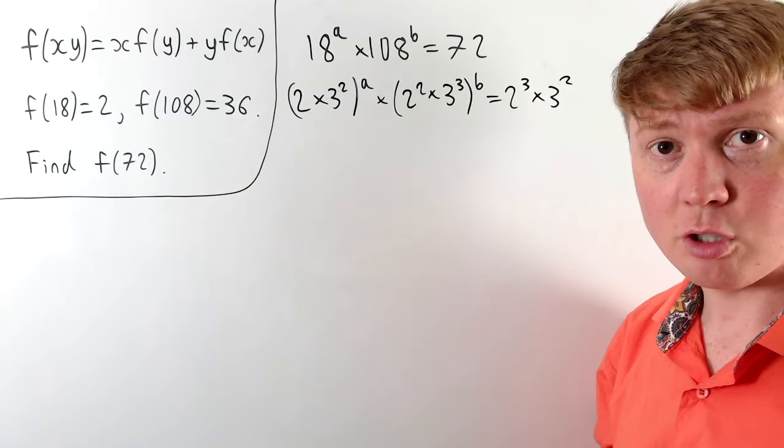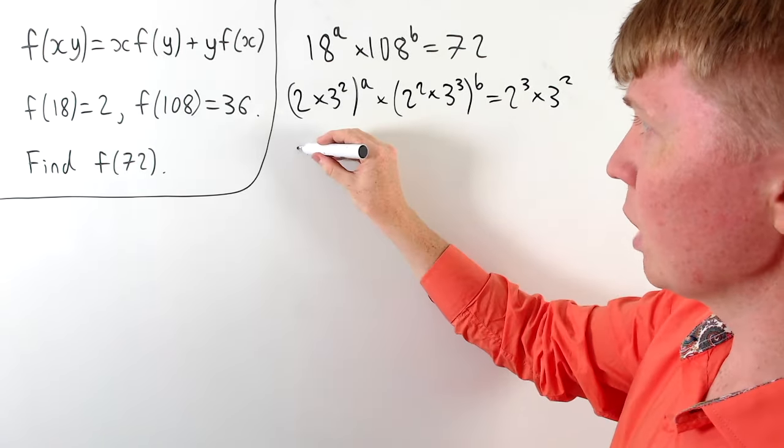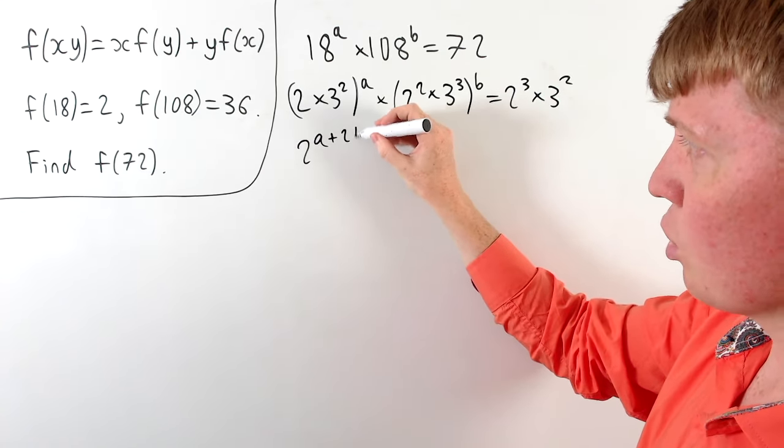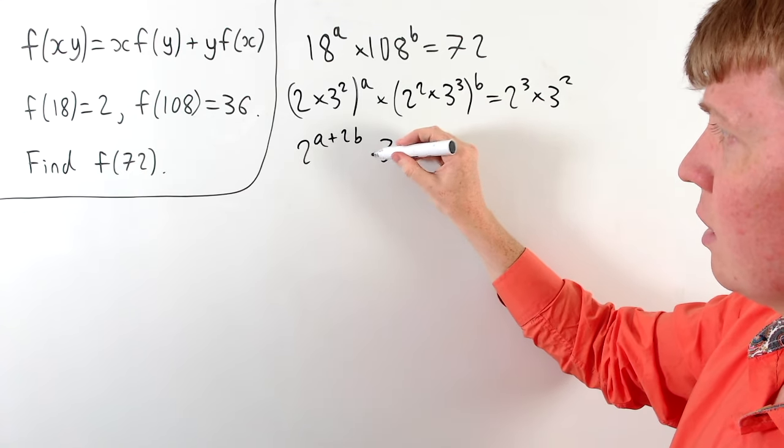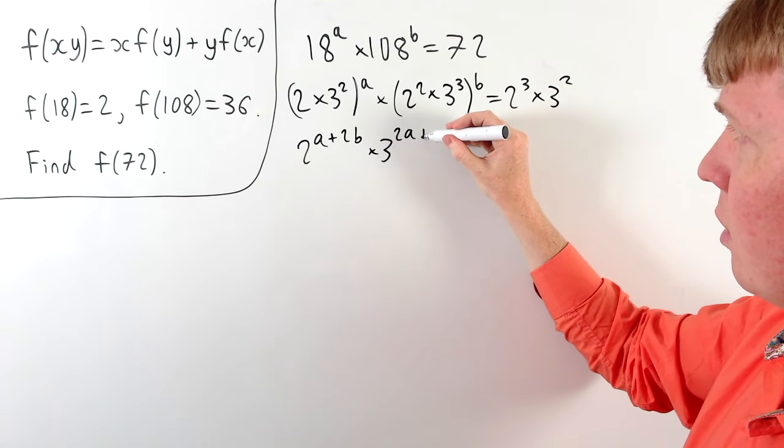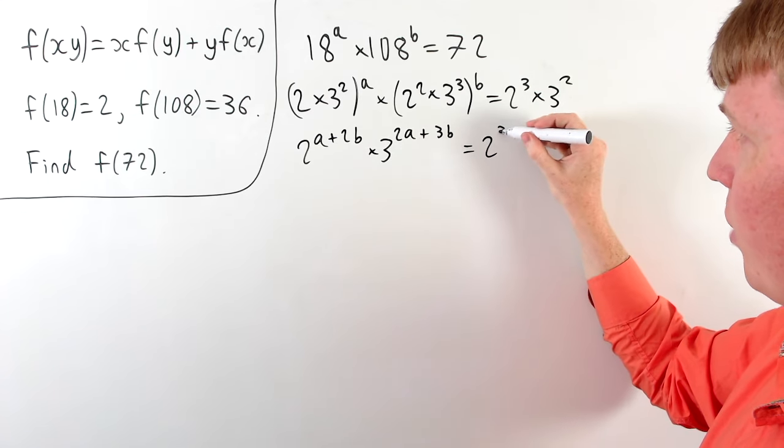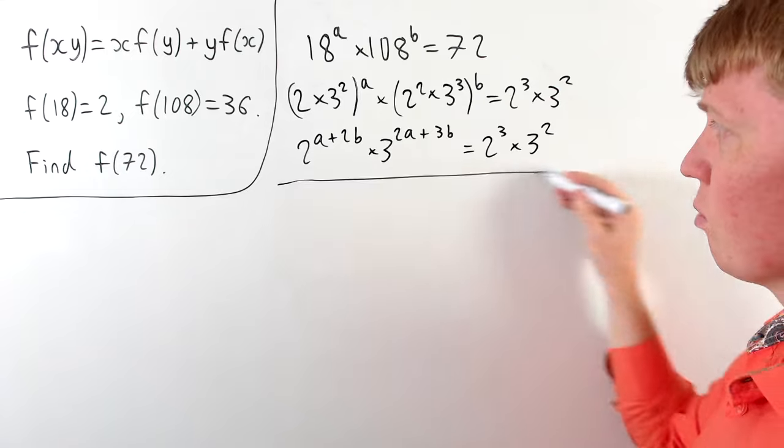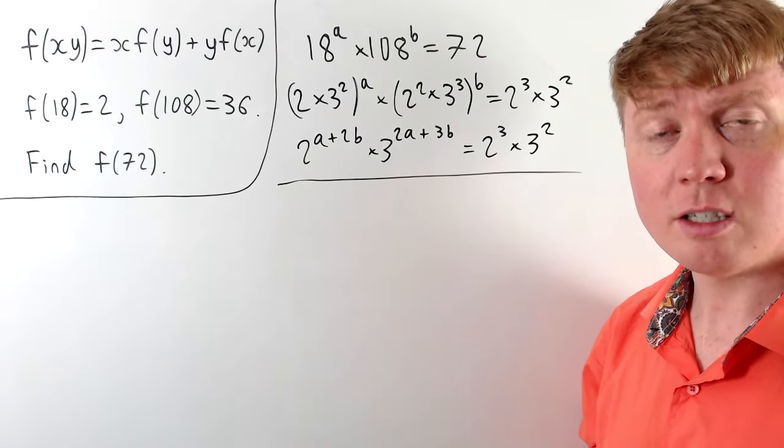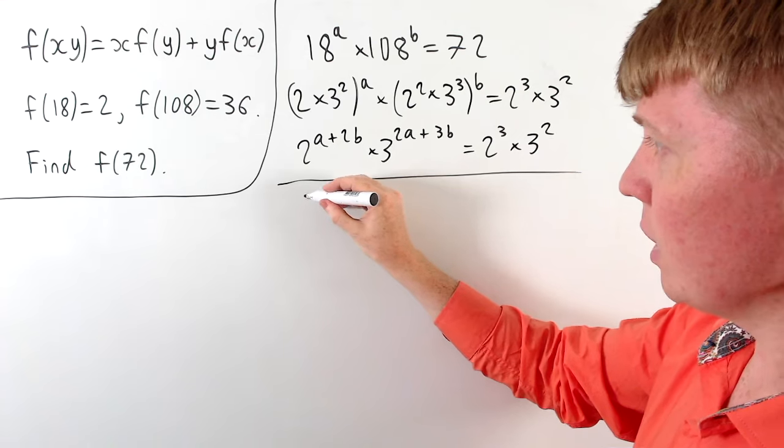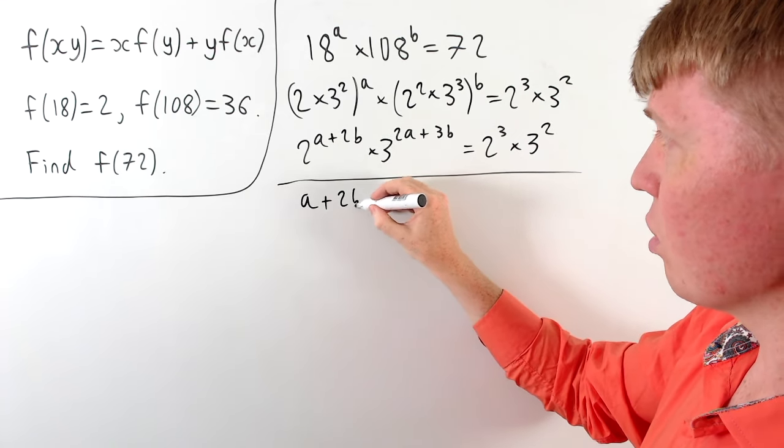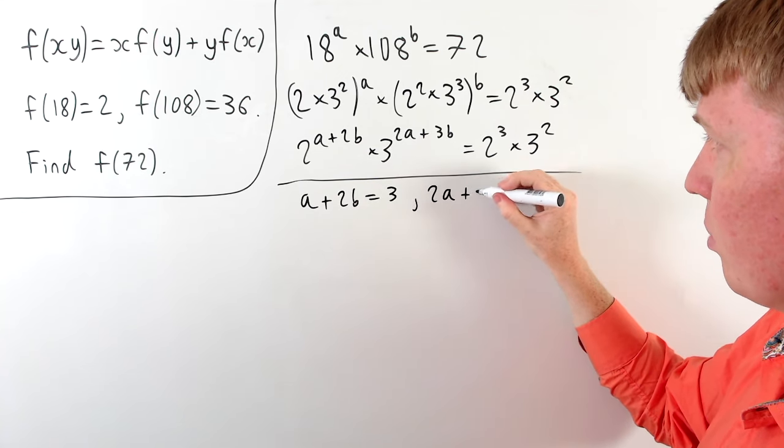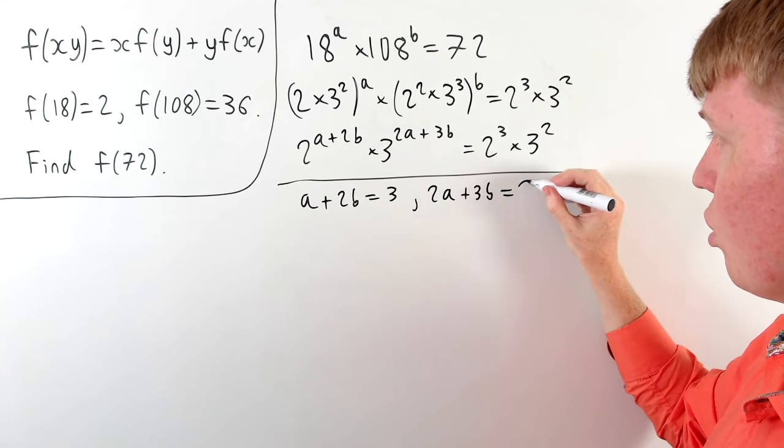So if we collect together our powers of 2 and our powers of 3 we get 2 to the a and we've also got 2 squared to the power of b so it's a plus 2b. And here we've got 3 to the power of 2a plus 3b. So then you can see comparing our powers of 2 and 3 we're going to get some simultaneous equations which we can now solve to find suitable a and b. So here a plus 2b is going to be equal to 3 just from the powers of 2. And the powers of 3 give us 2a plus 3b is equal to 2.